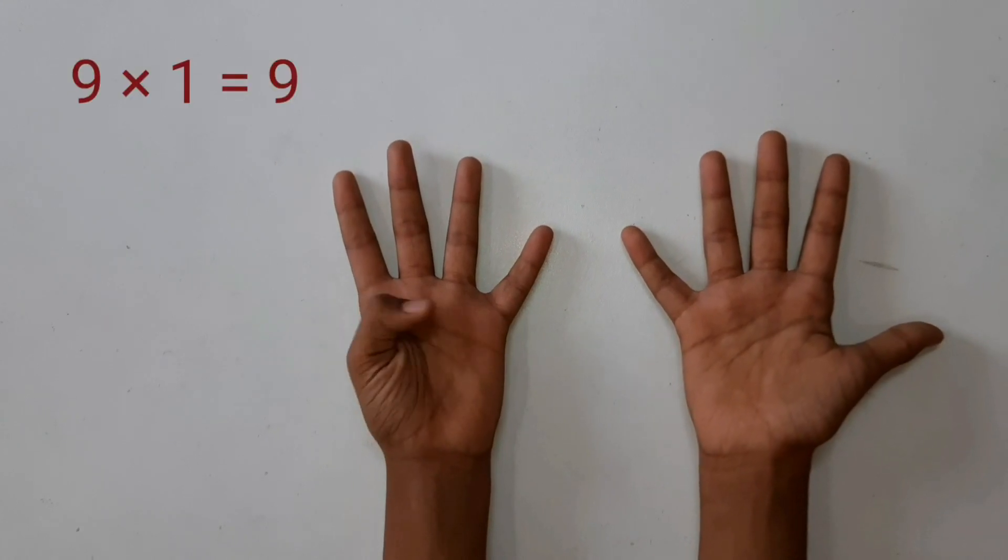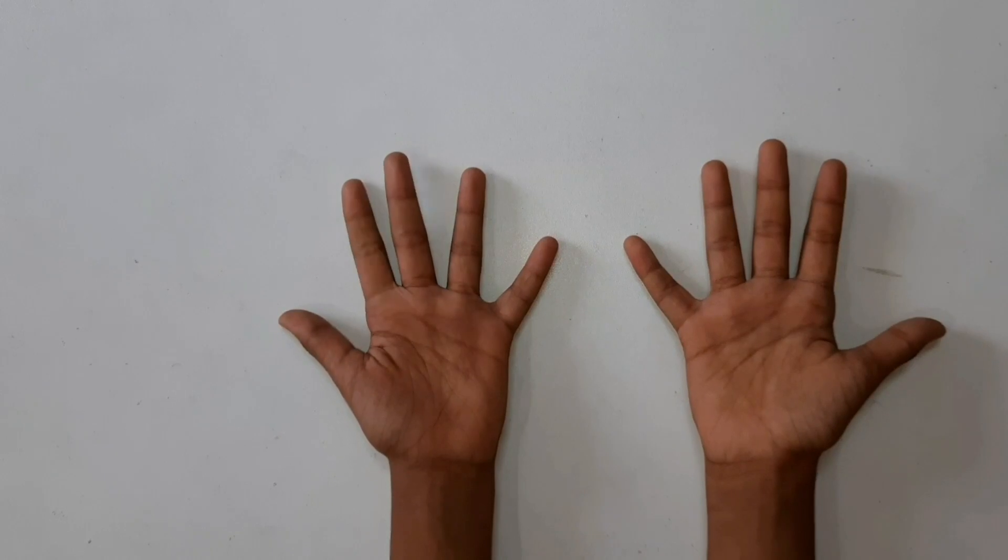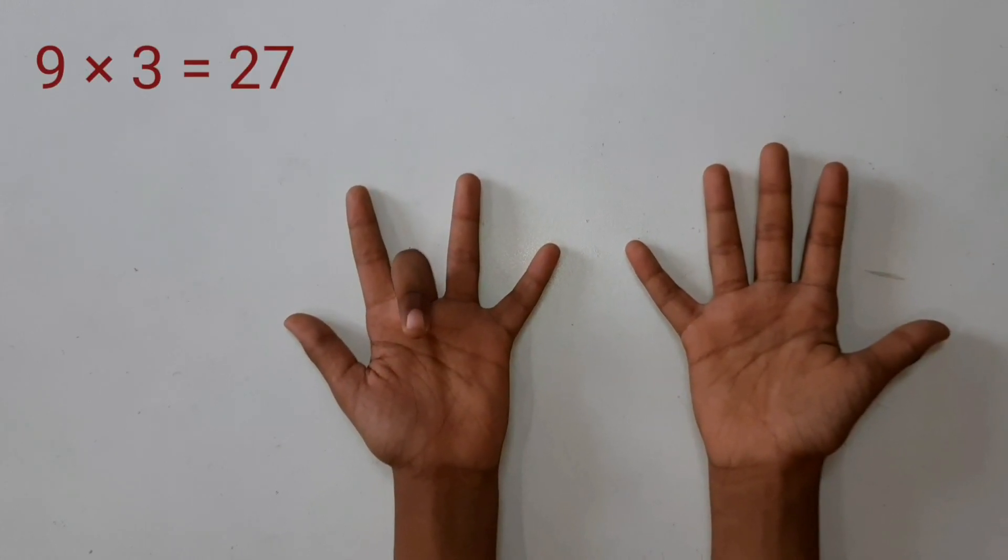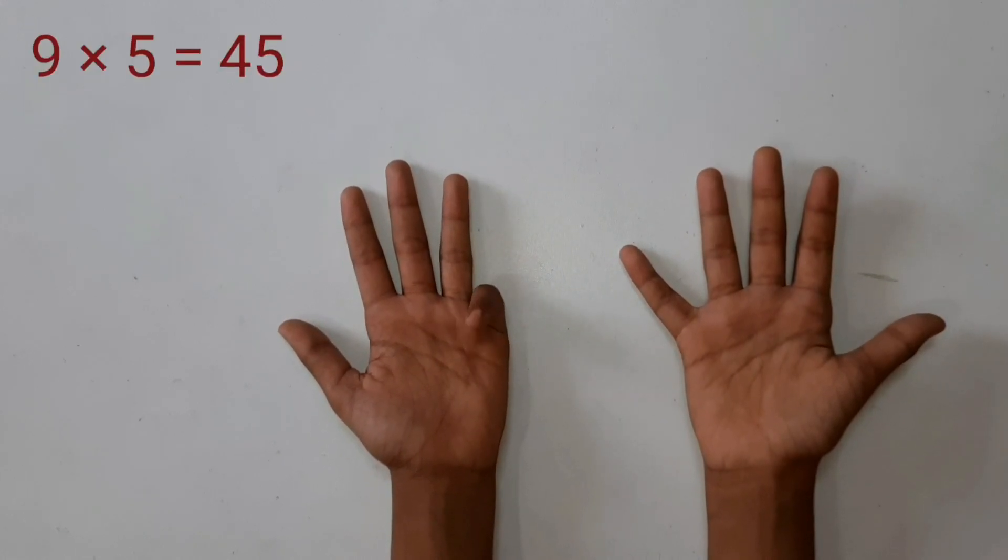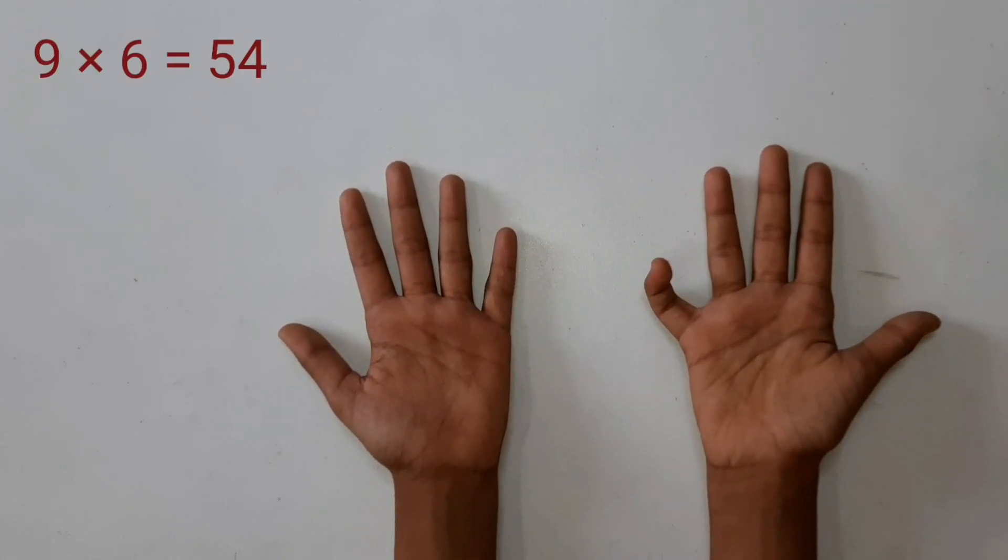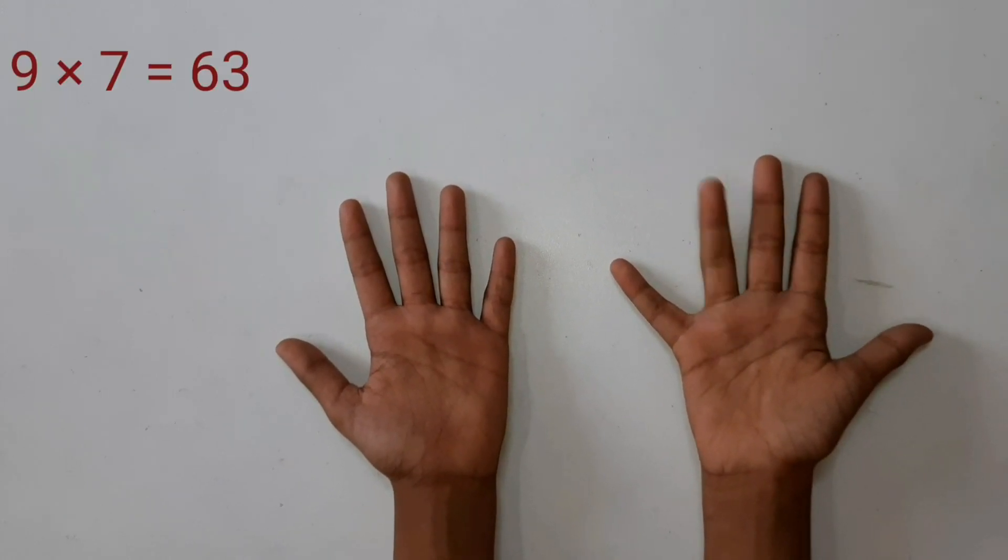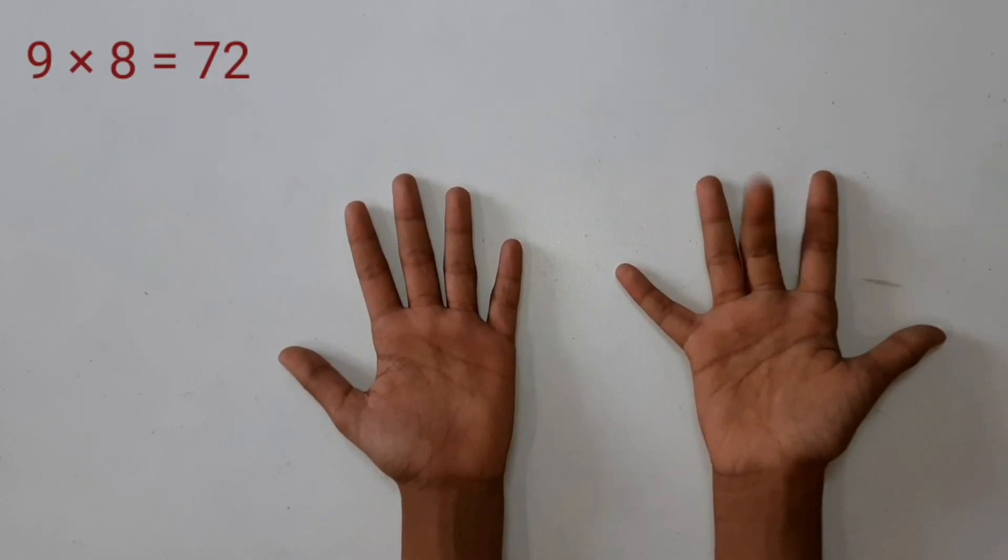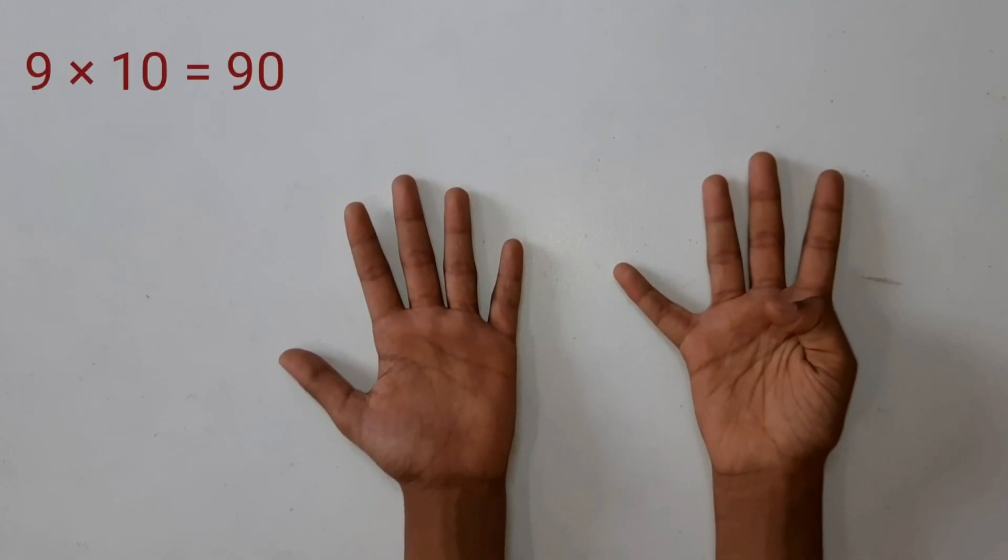9 ones are 9, 9 twos are 18, 9 threes are 27, 9 fours are 36, 9 fives are 45, 9 sixes are 54, 9 sevens are 63, 9 eights are 72, 9 nines are 81, 9 tens are 90.